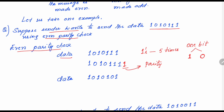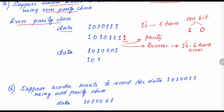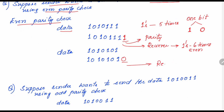Suppose the sender wants to send 1010101. Using even parity check, there are already an even number of 1s in this data, so the sender appends 0. The receiver checks whether the number of 1s appearing is even — if it is even, there is no error in the data. This is called the even parity check.